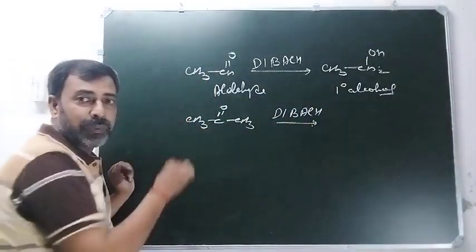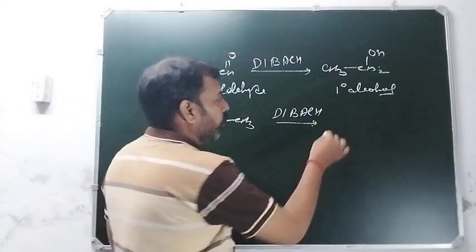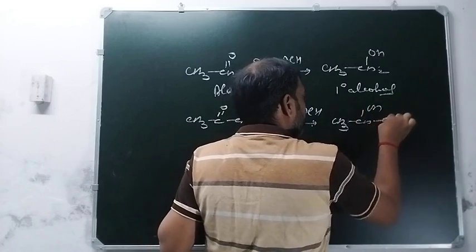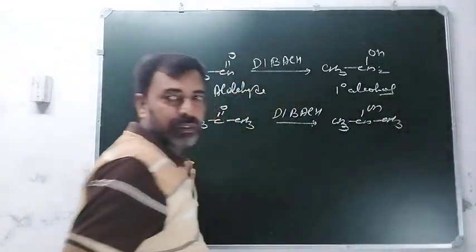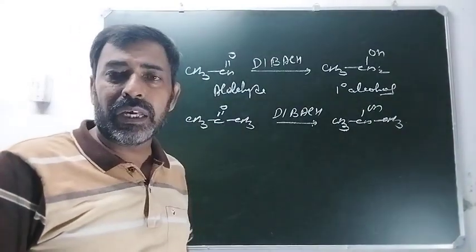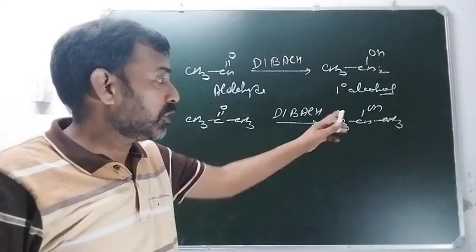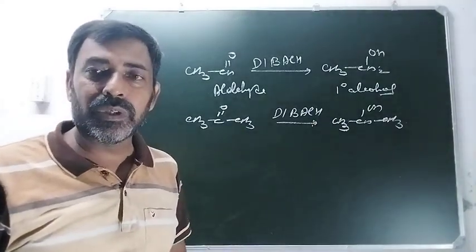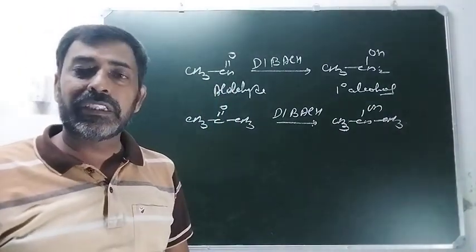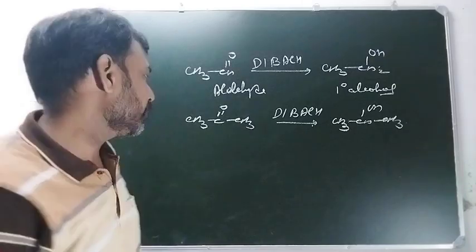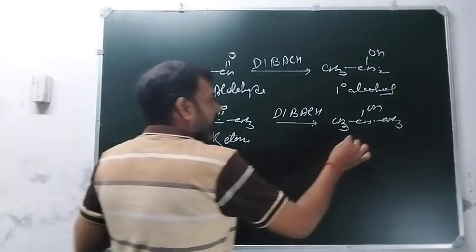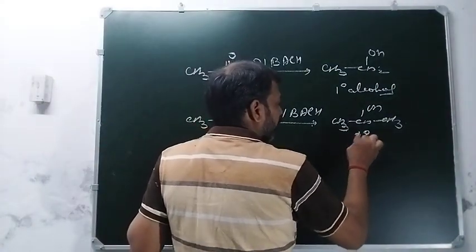This will be reduction and gives alcohol. The only difference here is: aldehyde gives primary alcohol, and ketone gives secondary alcohol.